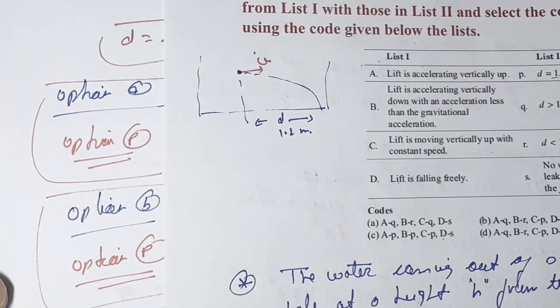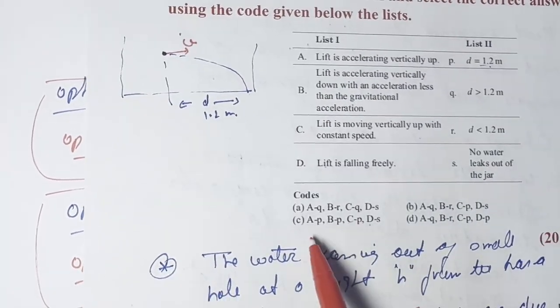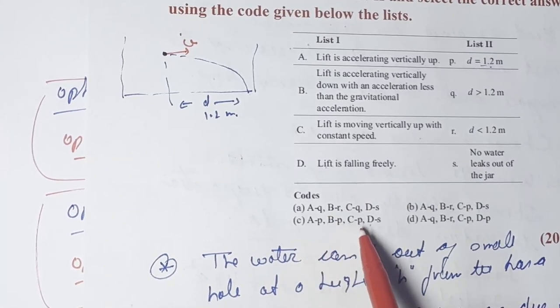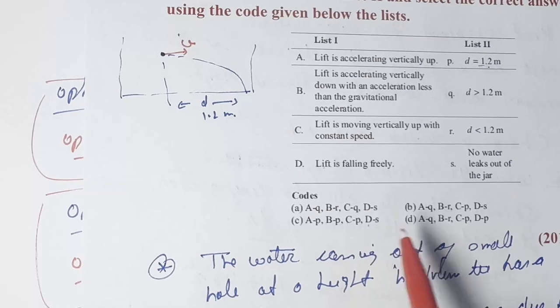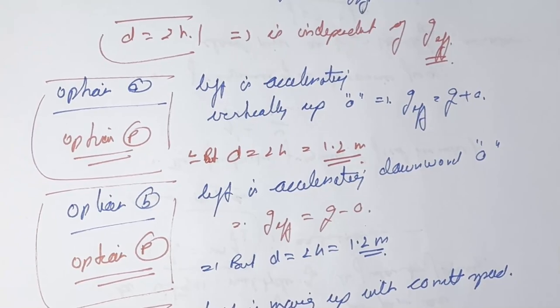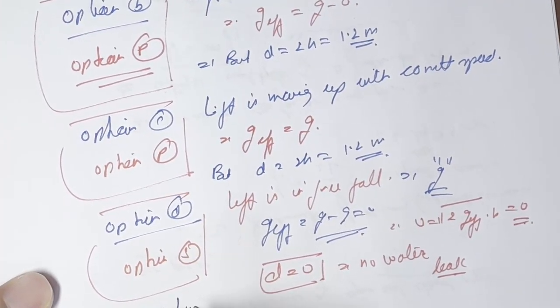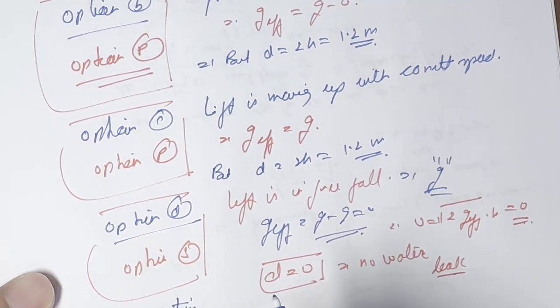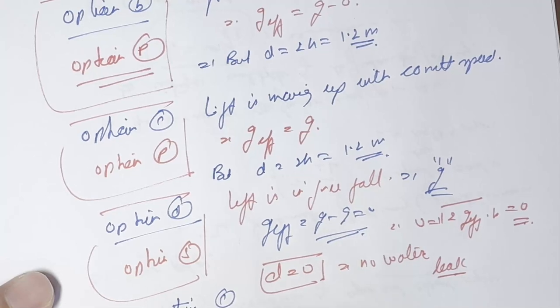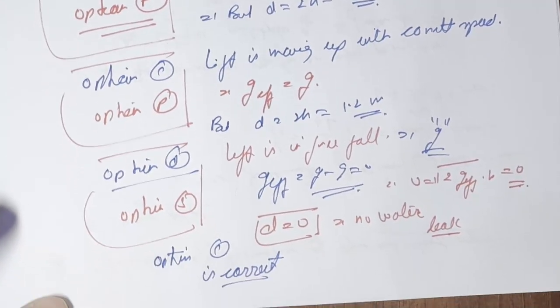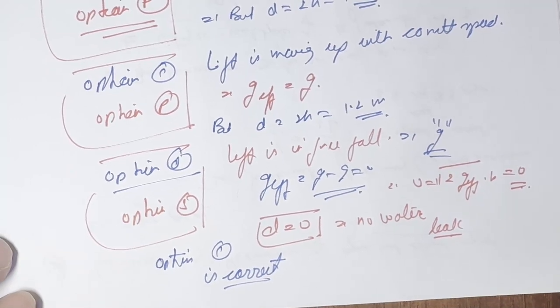So to summarize: options A, B, and C all match option P (d equals 1.2 meters), and option D matches option S (no water leakage). Therefore the correct answer is option C. Thank you, this completes the question.